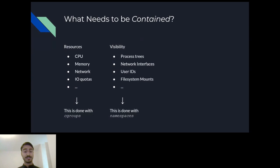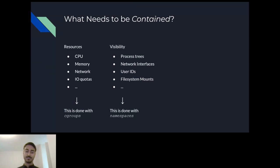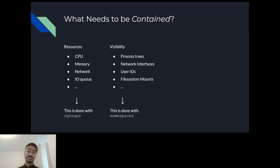Diving deeper into the internals of containers — we are only talking about Linux containers for now. You would want to limit the container's access to resources such as CPU, RAM, network bandwidth, and disk bandwidth. This is done using a feature called cgroups, which allows us to limit resource usage for a group of processes. You would also want to limit the visibility the containers have. If we would only limit resources, nothing would stop a malicious container from changing its own resource limitations. So we also limit the container's visibility to host objects such as processes, network interfaces, users, and mounts — and this is done using a feature called namespaces.